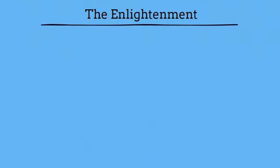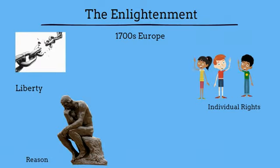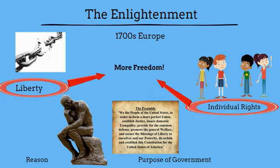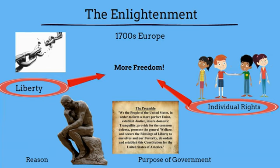The Enlightenment began in Europe in the 1700s. During this period, people began writing about the importance of liberty, individual rights, and reason. They also wrote about the purpose of government and the idea that governments that honor liberty and individual rights provide more freedom for their people. Let's dig deeper into some of these specific ideas that influenced the Founding Fathers.